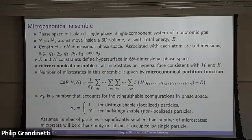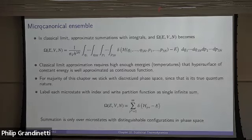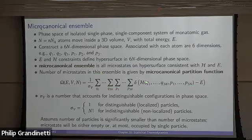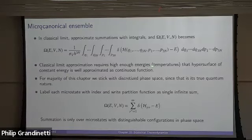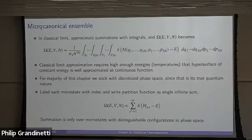That discrete summation can be approximated as an integral in the classical limit by making the hypervoxel size smaller and smaller, but we must still divide by h^(3N) to keep the result dimensionless. This classical limit approximation replaces the discrete sum with a phase space integral. However, the true nature of phase space is discrete, so the real equation is the discrete counting expression.